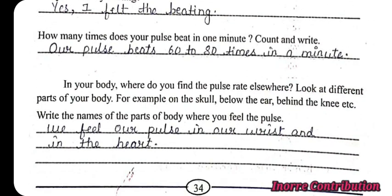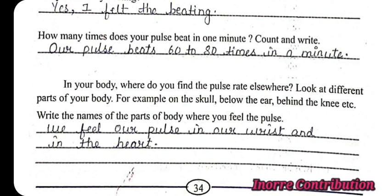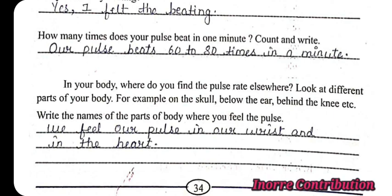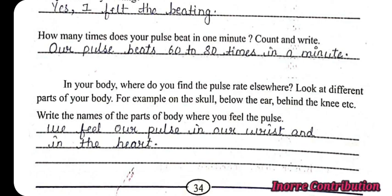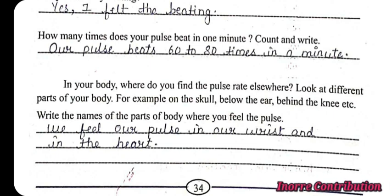In your body, where do you find the pulse rate elsewhere? Look at different parts of your body — for example, on the skull, below the ear, behind the knee, etc. Write the names of the body parts where you feel the pulse. We feel our pulse in our wrist and in our neck. Note: 'heart' was written by mistake — please mark it as 'neck'.